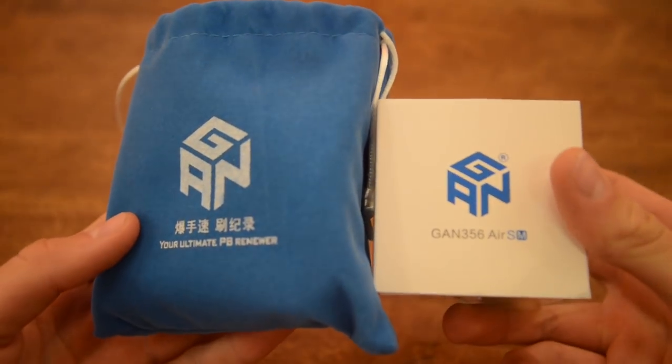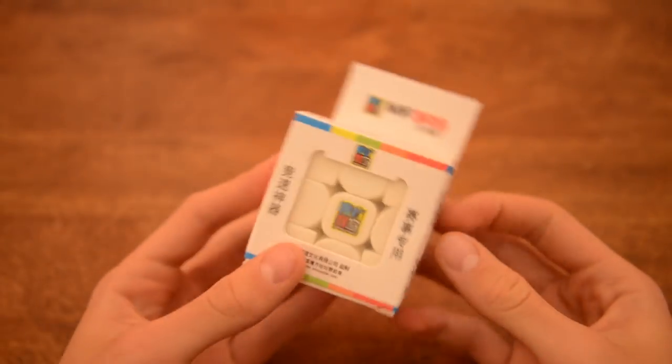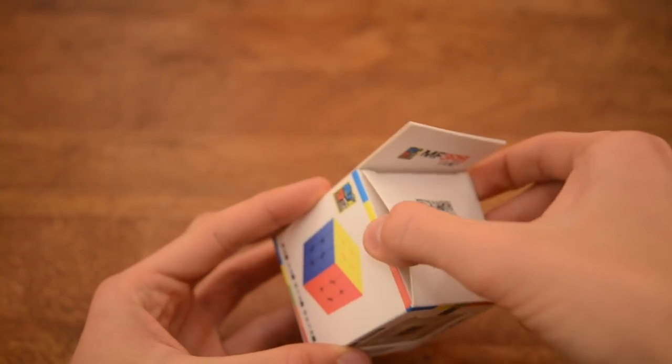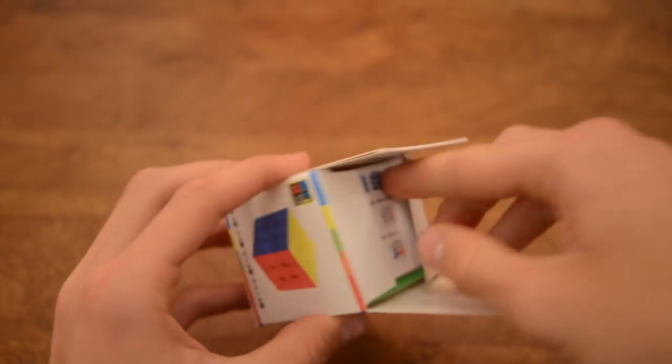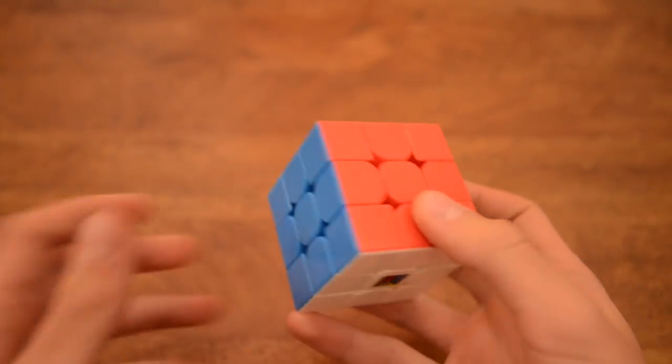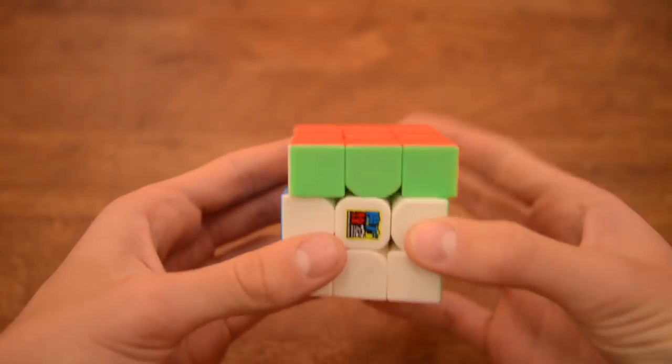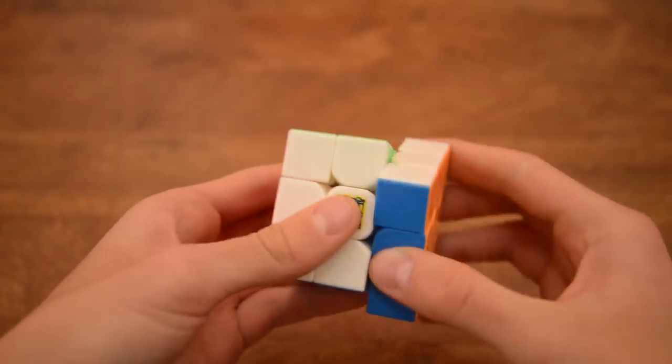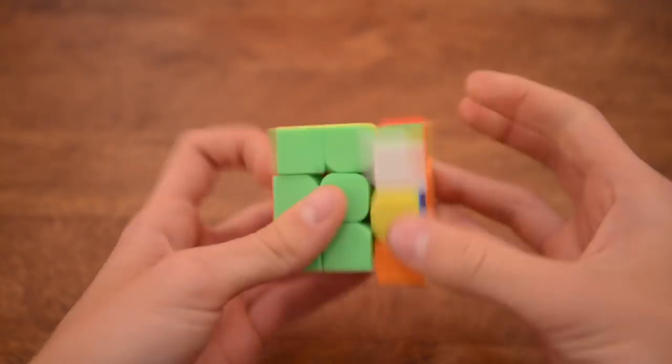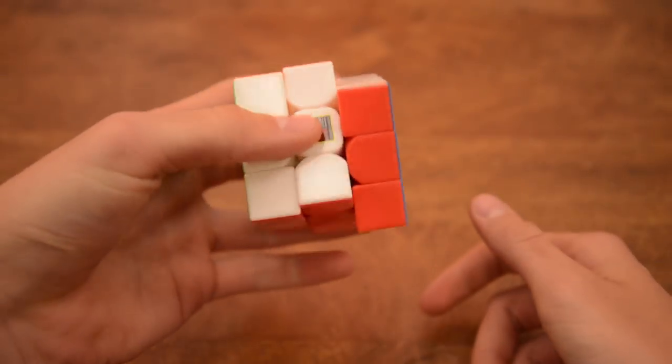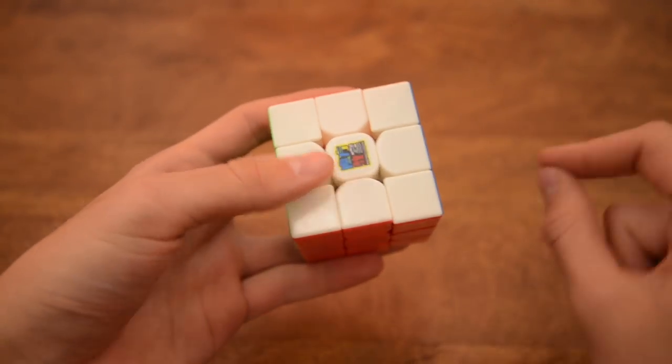Before we get into the unboxing of this cube, I also ordered the MF3RS 2, no the first version I meant, and I actually ordered three of the same cubes, three MF3RS version ones, and they are so good. I would like to point out that this cube costs like three dollars at the Cube ZZ. It is so good. I mean, I can just get my average easily on this cube.